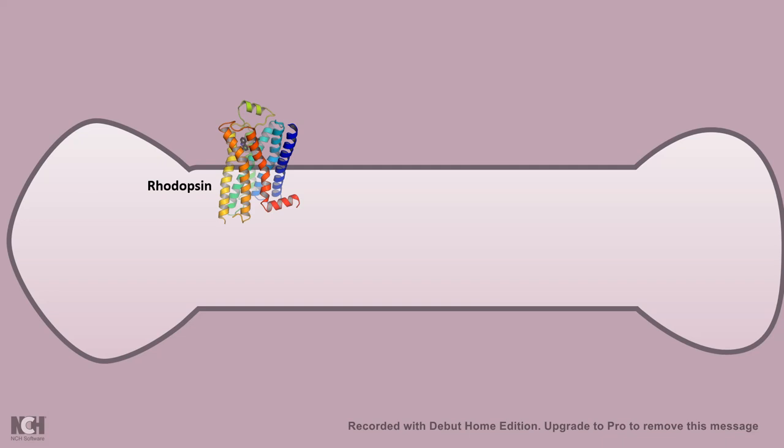Let us look at the signal transduction mechanism in more detail. Rhodopsin, as it's a G-protein coupled receptor, has seven transmembrane domains. Rhodopsin is generally coupled with a trimeric G-protein which is known as transducin.